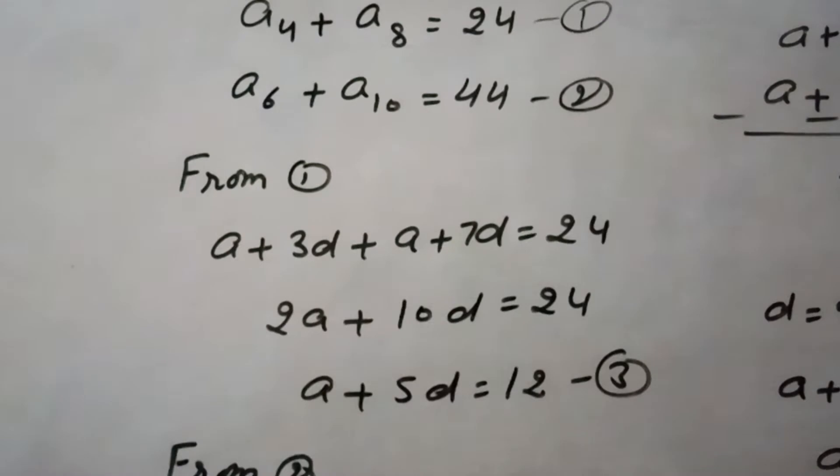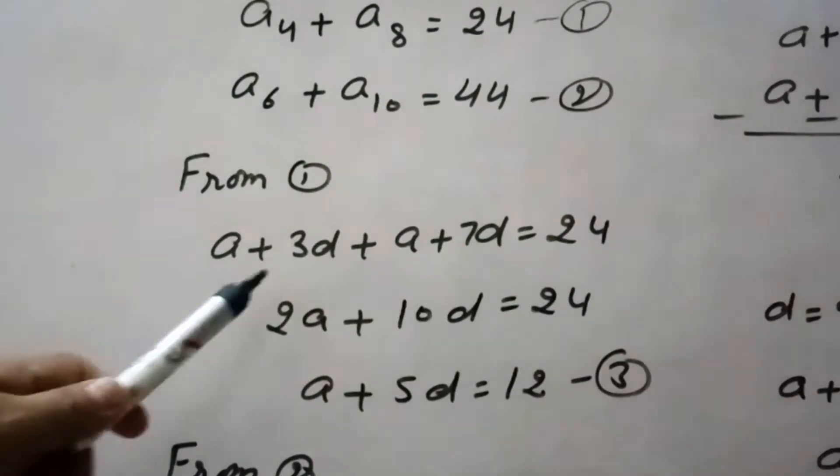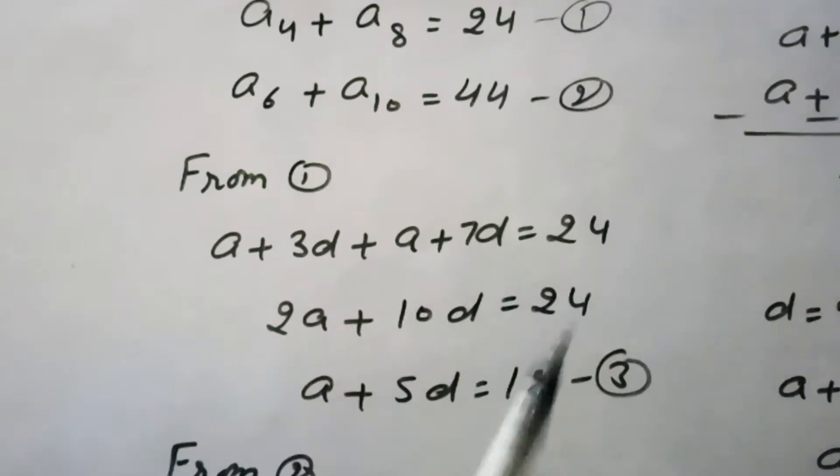Now, after expanding the first equation, A4 equals A plus 3D, A8 equals A plus 7D equals 24.